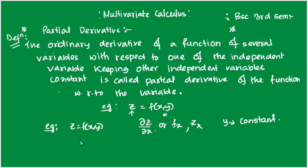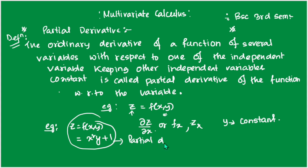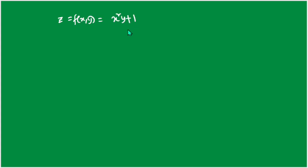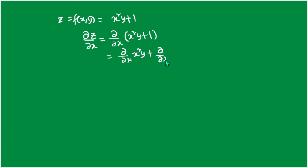Suppose we have the function z = f(x, y) = x²y + 1. Now let us consider what happens when we apply partial differentiation to this function. For the function x²y + 1, we apply the partial differentiation operator.